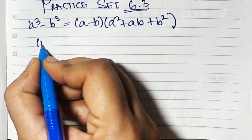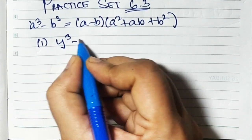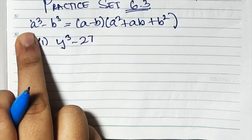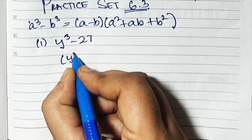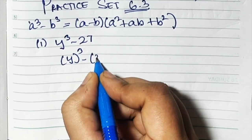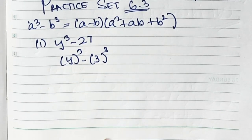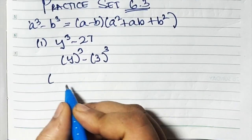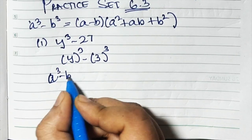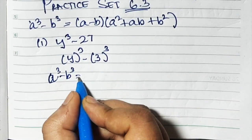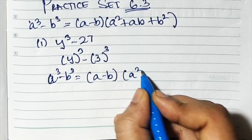The first sum is y cube minus 27. Convert it into an a cube minus b cube pattern. So y cube minus 27 becomes y cube minus 3 cube, because 27 is the cube of 3. Now let's write the formula: a cube minus b cube equals a minus b times a square plus ab plus b square.